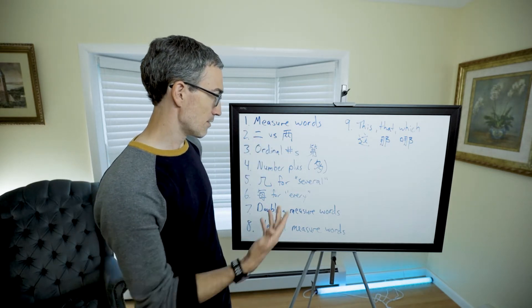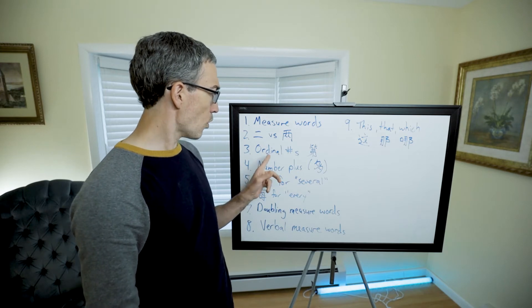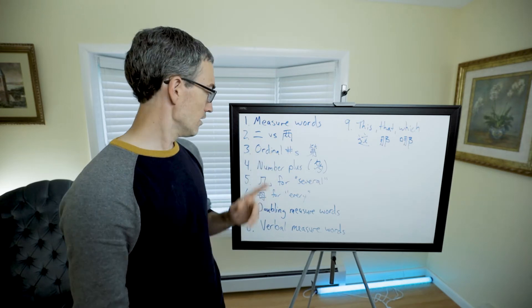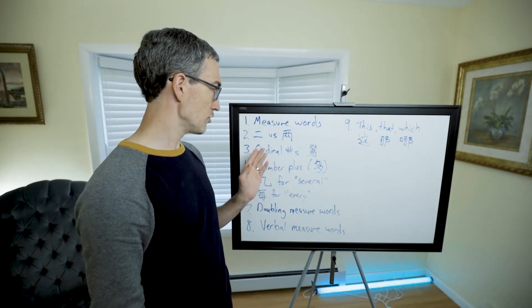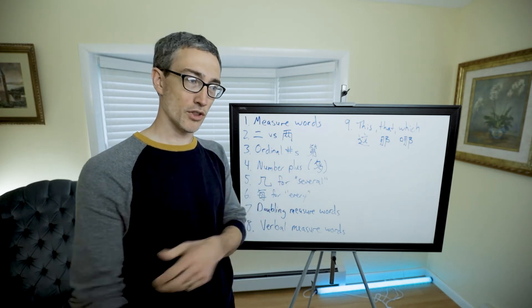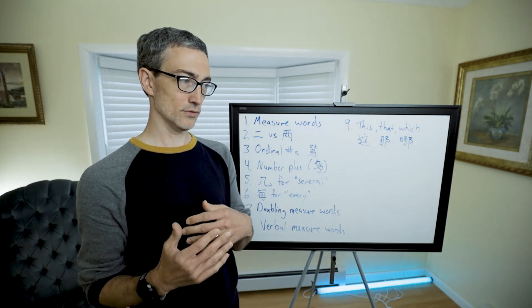There are some exceptions. When it's an ordinal number, then you always use 二 (èr), never 两 (liǎng). We talked about ordinal numbers. In order to make an ordinal number like first, second, hundredth, and so forth, you just put a 第 (dì) before the number and voila.